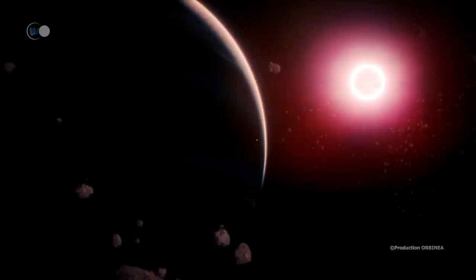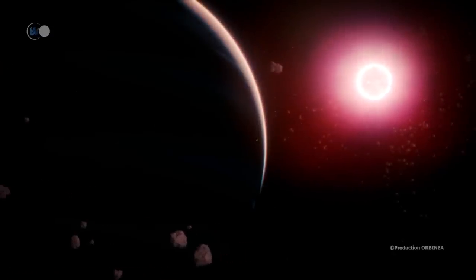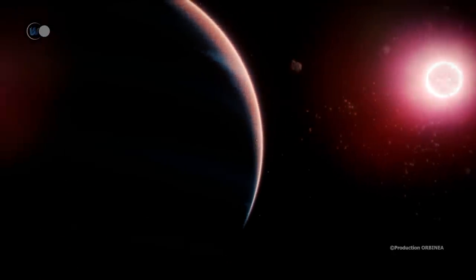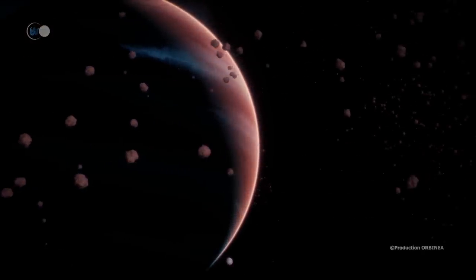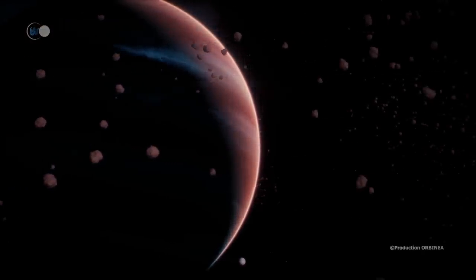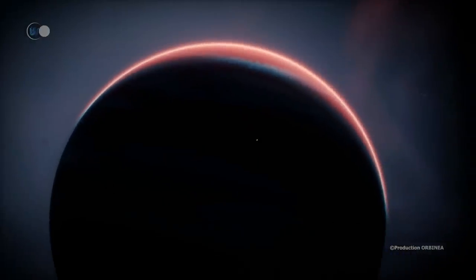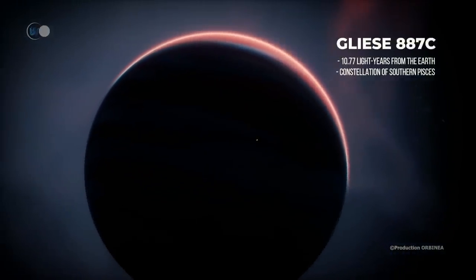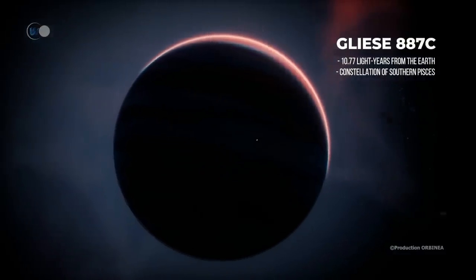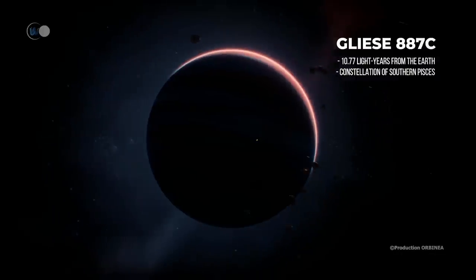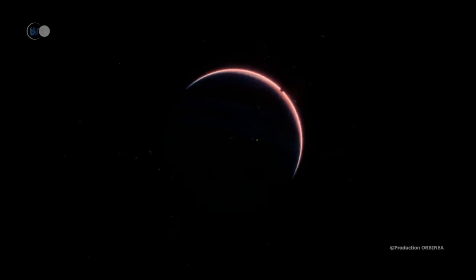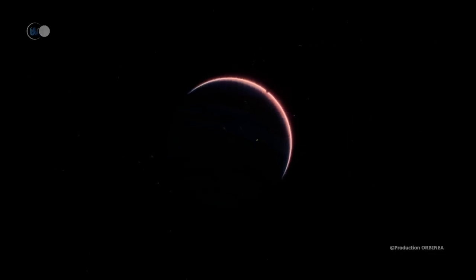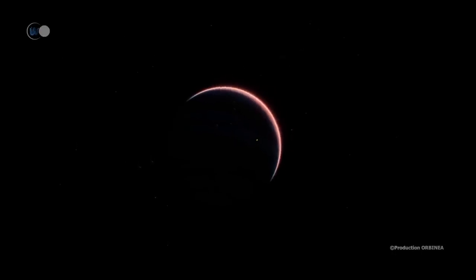The first, Gliese 887b, is a super-Earth of about four Earth masses. It orbits its star in 9.3 days. Unfortunately, the small distance between it and its host, a little over 10 million kilometers, or 6.2 million miles, means that the temperature is far too high for water to be present in a liquid state. The second, Gliese 887c, is also a super-Earth, whose mass is estimated at seven times that of the Earth. It orbits the star in 21.8 days.